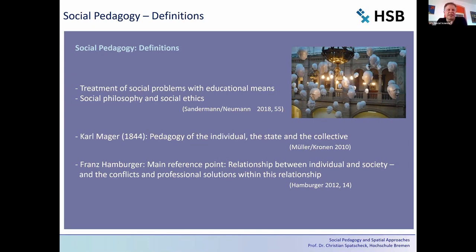The classic definition from Karl Mager is very helpful. He coined the term 'social pedagogy' in 1844, saying social pedagogy is not just individual pedagogy but also a social pedagogy for and with the state and collective — bringing together the individual, the state, and the collective. Franz Hamburger adds that social pedagogy deals with the relationship between the individual and society and the conflicts and solutions that emerge, mediating between individual and society with professional solutions.